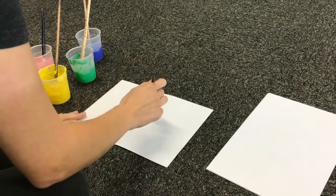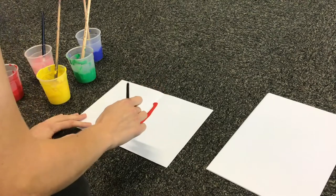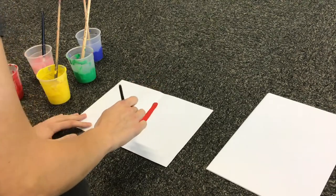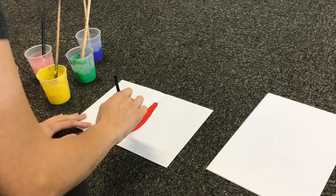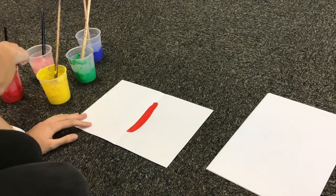For the body of the butterfly I chose red paint. I chose blue for the outline of the butterfly's wings and both yellow and pink for the pattern on the wings. I chose green for the butterfly's antenna.